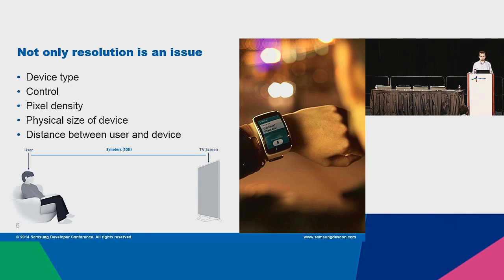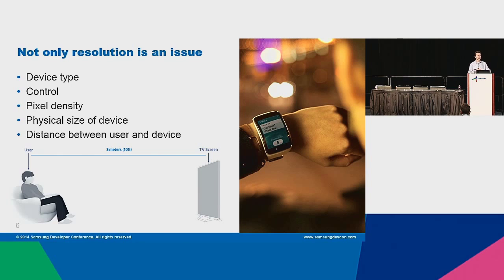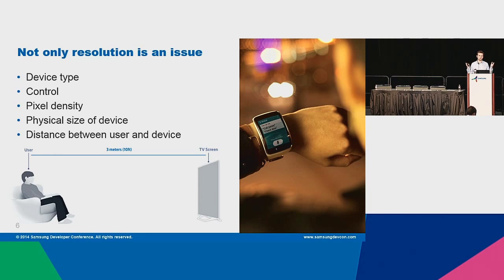Have you ever thought about why a 15-inch TV has the same resolution as a 5-inch smartphone? It's quite different. You also need to consider viewing distance because the distance between the user and the device varies. For a smartwatch on your hand, the distance between the eyes and the device is about 40 centimeters. When you use your TV, the distance is about 3 meters. So even though the screen is bigger, if the distance is wider it appears smaller to your eyes — you need bigger margins, bigger layout, and so on.